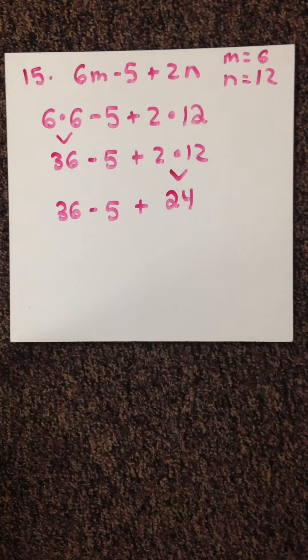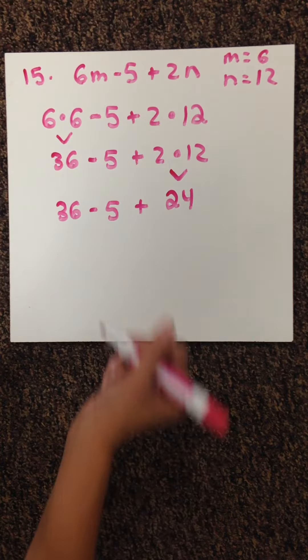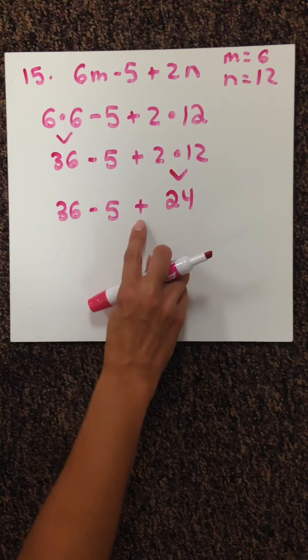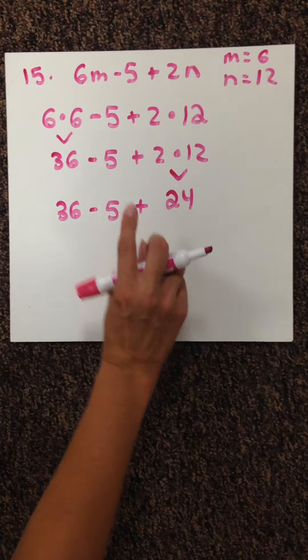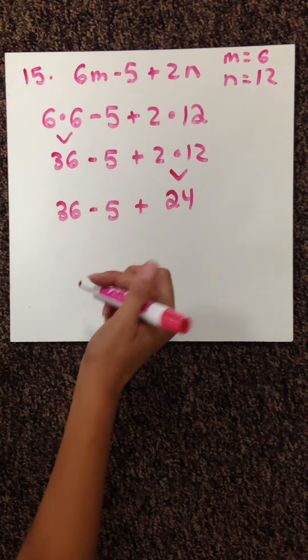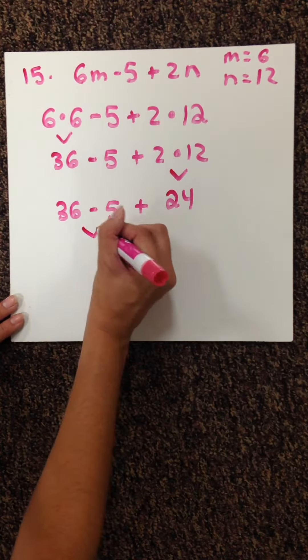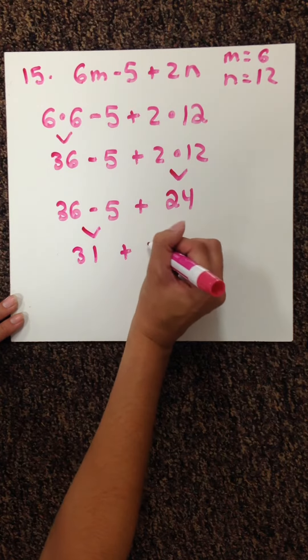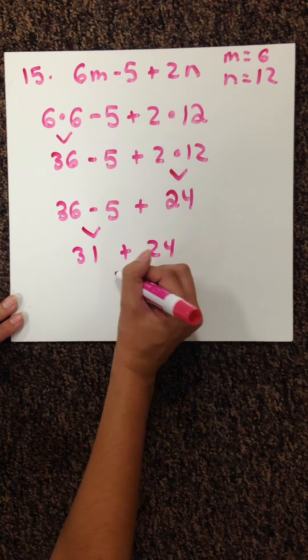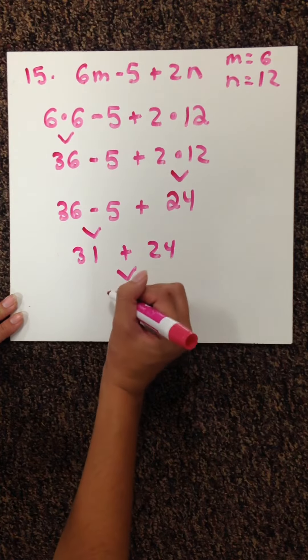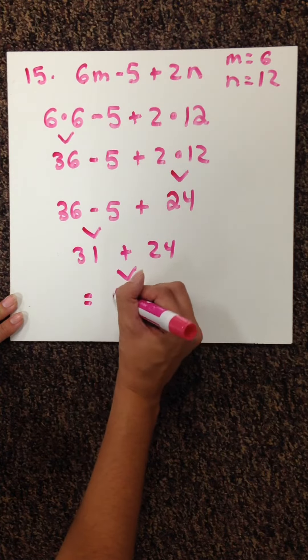Okay, we still have some more steps to go. This is a long one. We're going to start with subtraction and addition. They're the same level, so we work from left to right. 36 minus 5 first. That is 31 plus 24. Our final step: add those together, and we get 55.